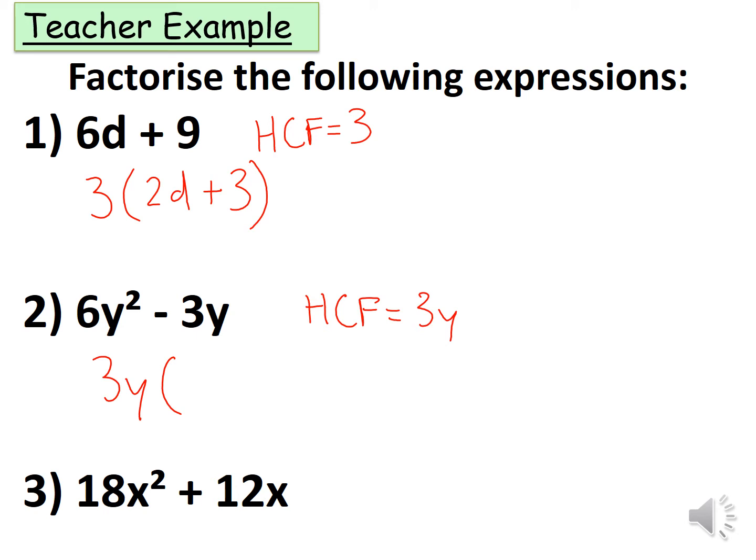Now 3y divided by 3y should give me just one. So let's check if this is correct. 3y times 2y gives me 6y², and 3y times minus 1 gives me minus 3y. So this is correct.